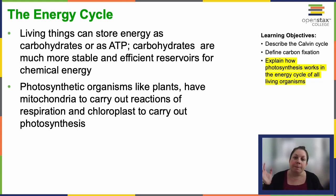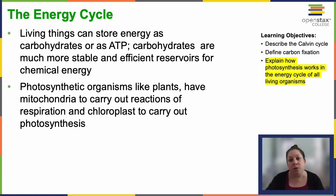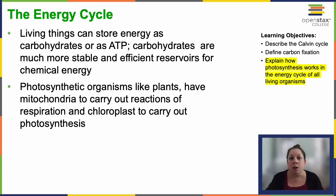Photosynthetic organisms, including plants, have both mitochondria and chloroplasts. They need to do both processes because there are lots of other reactions throughout their cells that require ATP. So we have photosynthesis to produce the sugar molecule to store all of the plant's energy, and then mitochondria that perform oxidative phosphorylation — aerobic respiration — to produce ATP for that plant.